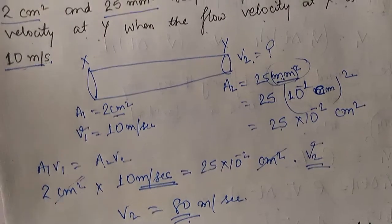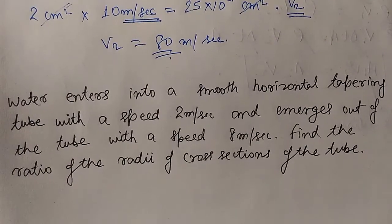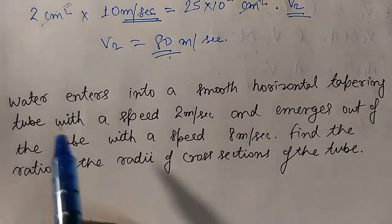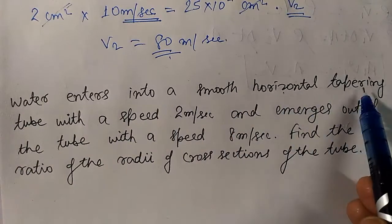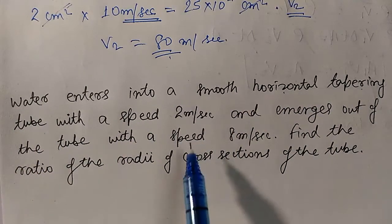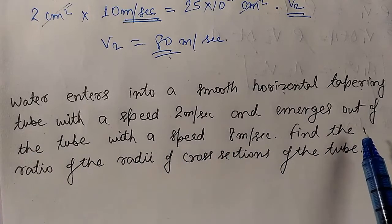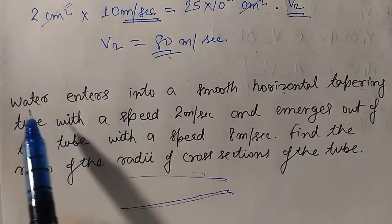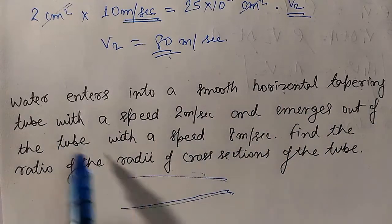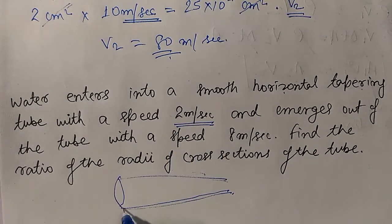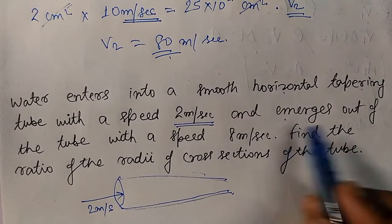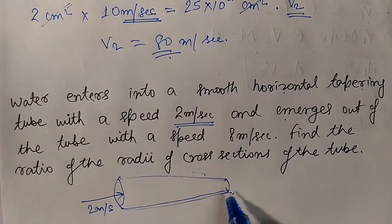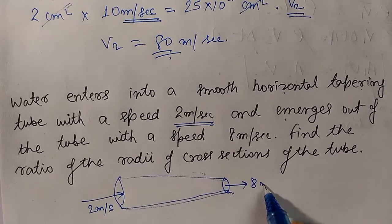Let's look at the next question. Water enters into a smooth horizontal tapering tube — tapering means the cross-section decreases as we move forward. Water enters with a speed of 2 m/s and emerges out of the tube with a speed of 8 m/s.